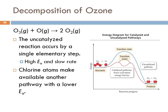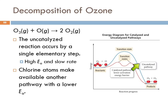Let's look at the decomposition of ozone. This is of some interest to anyone who lives on the planet because of our concern for the ozone layer, which protects us from harmful ultraviolet radiation. Ozone is O3, and it can react with an oxygen atom to form two oxygen molecules. The uncatalyzed reaction happens by a single elementary step: O3 reacts with an oxygen atom, goes through a transition state, and then to the products. There's a relatively high activation energy, so this is a slow rate of reaction.